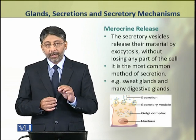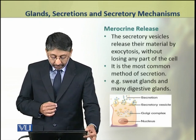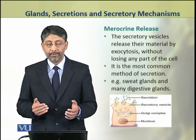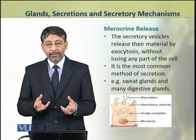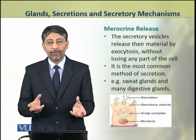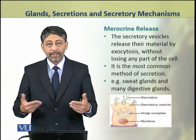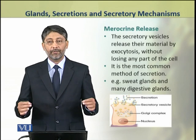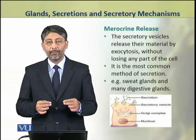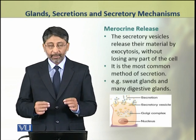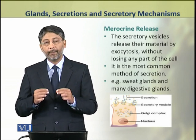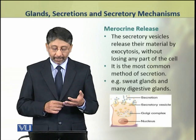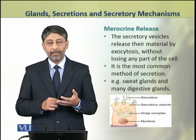During merocrine release, the secretory vesicles release their material by exocytosis. The secretory vesicles fuse with the cell membrane, an opening forms, and the secretions exit the cell. In this release, there is no loss of cytoplasm or any component of the cell. This is the most common method of secretion, seen in sweat glands and many digestive glands.